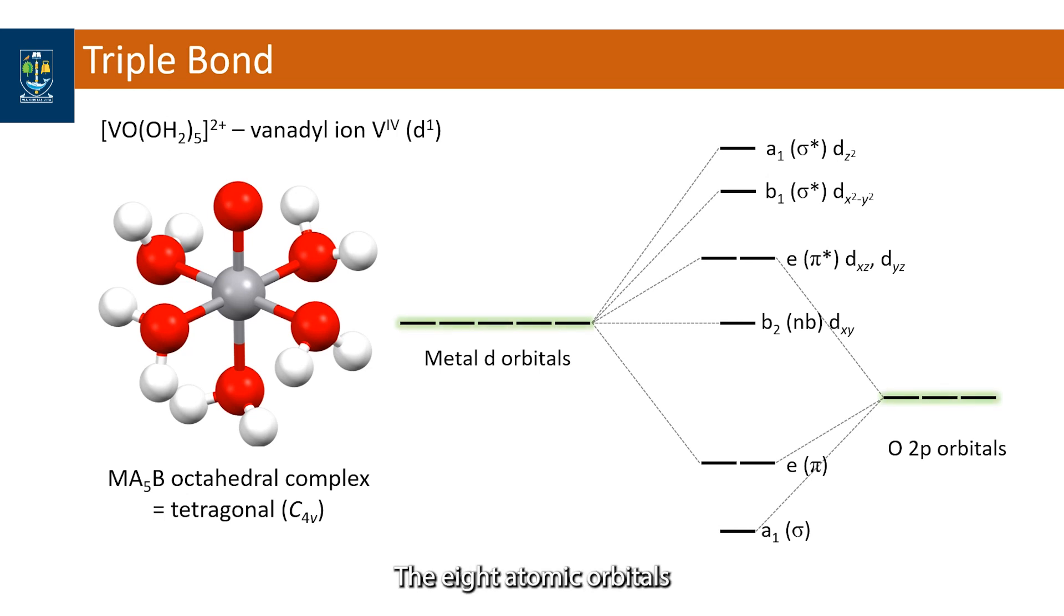The eight atomic orbitals from these two atoms combine to give eight molecular orbitals of which six are the bonding and antibonding orbitals of the oxo metal unit. To the left side we add the number of d electrons from the metal ion this being one for vanadium four.